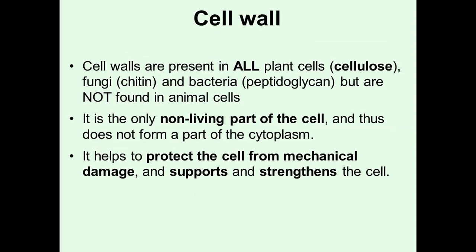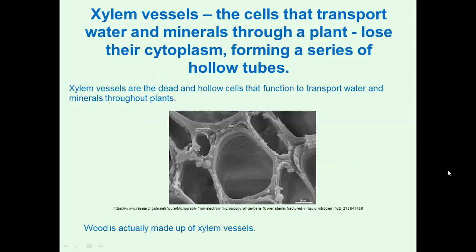There's also fungi — the chemical from which the fungal cell wall is made is called chitin, the same chemical from which the skeleton of insects is made. Bacteria have the chemical peptidoglycan in their cell walls. These are not found in animal cells because animal cells don't have cell walls. The cell wall is considered the only non-living part of a cell, doesn't form part of the cytoplasm, protects the cell from mechanical damage, and its main function is to support and strengthen the cell.